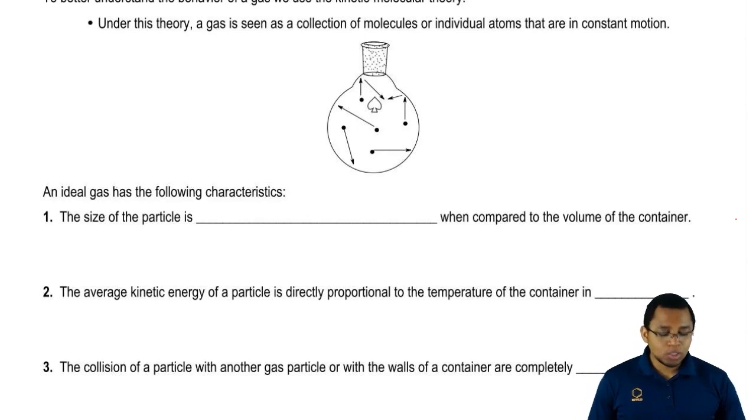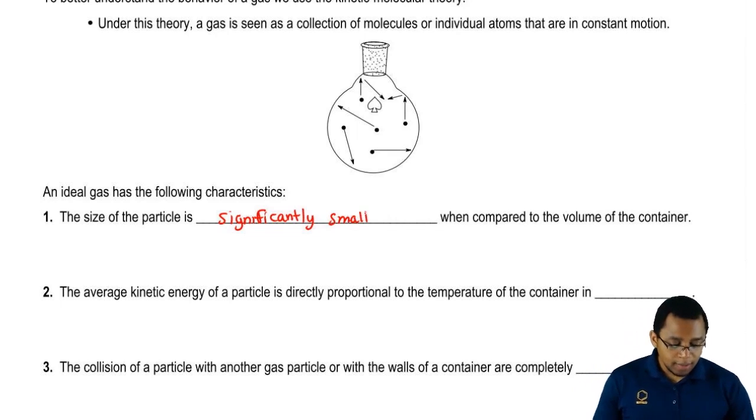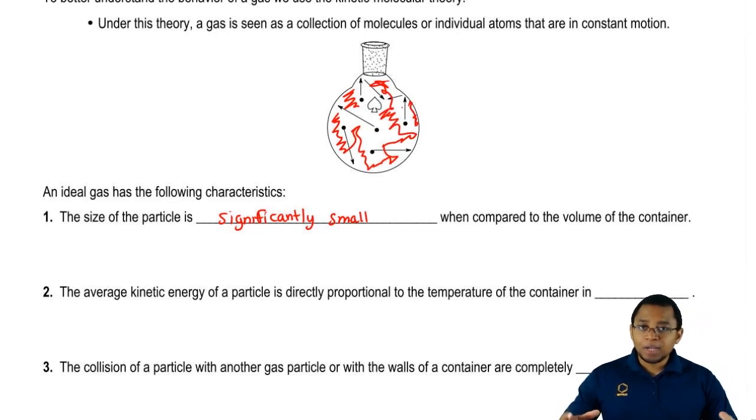The first criteria to be an ideal gas is the size of the particle is significantly small when compared to the volume of the container. What does this mean? If you look at all this volume inside of this container and compare the size that's free to the size of each gas particle, the gases really don't take up that much room. That's what it takes to be an ideal gas.